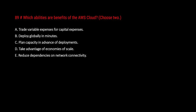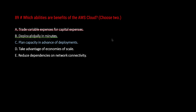Let's eliminate options. 'Trade variable expenses for capital expenses' is wrong — it is the other way around. When moving from on-premise to cloud you are trading capital expenses for variable expenses, because cloud is pay-as-you-go. 'Deploy globally in minutes' — yes, this is true. 'Plan capacity in advance of deployments' — with on-premise you had to buy servers ahead of time, but with cloud you don't.